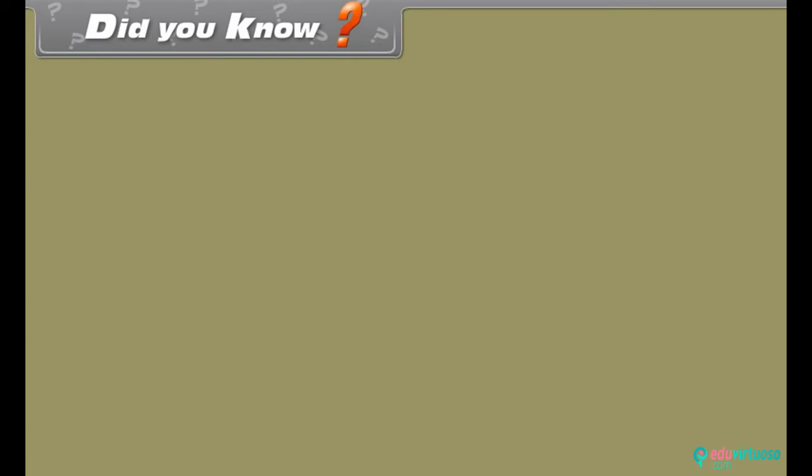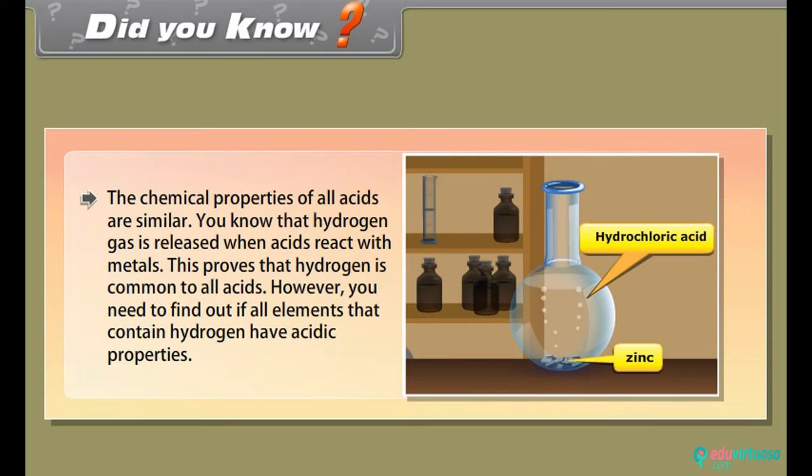Did you know? The chemical properties of all acids are similar. You know that hydrogen gas is released when acids react with metals. This proves that hydrogen is common to all acids. However, you need to find out if all elements that contain hydrogen have acidic properties.